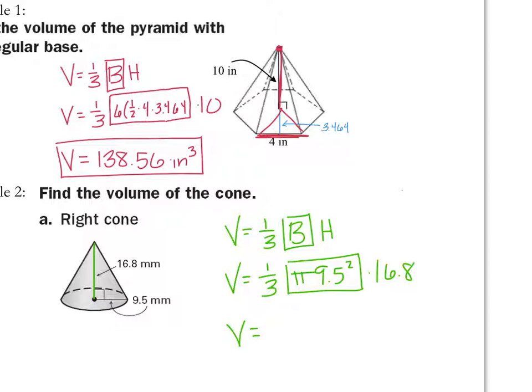Sometimes you might have to do Pythagorean theorem if you are given the slant height. But, in this case, we do not have to. And then, I'm going to punch all of that in my calculator. And I get 1587.761 millimeters cubed.